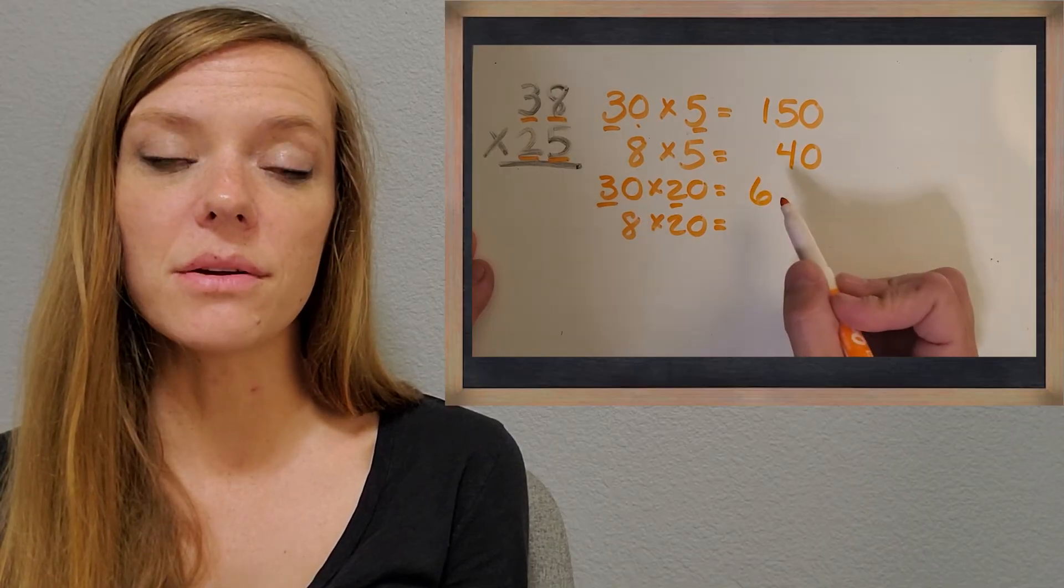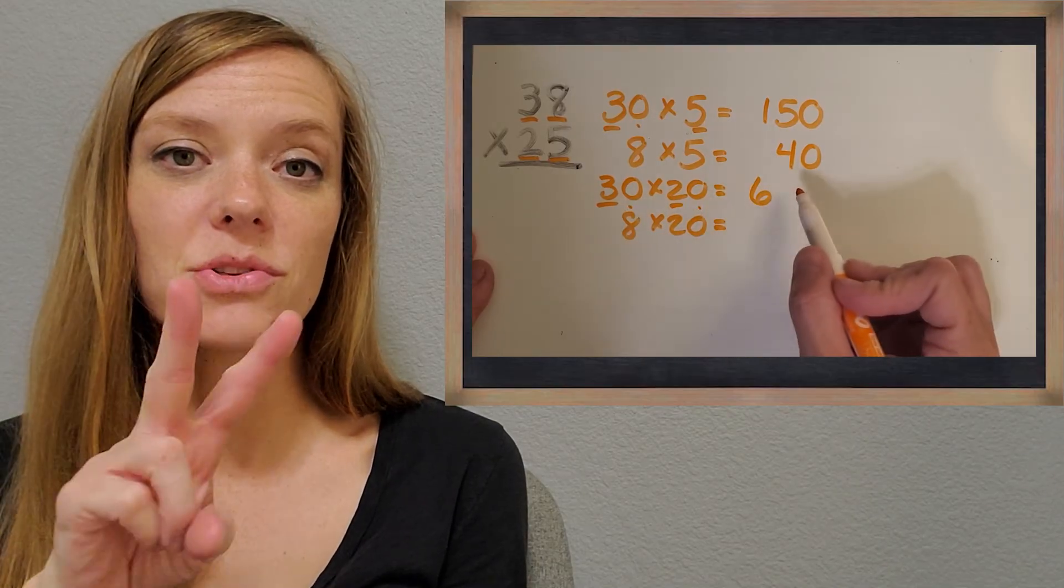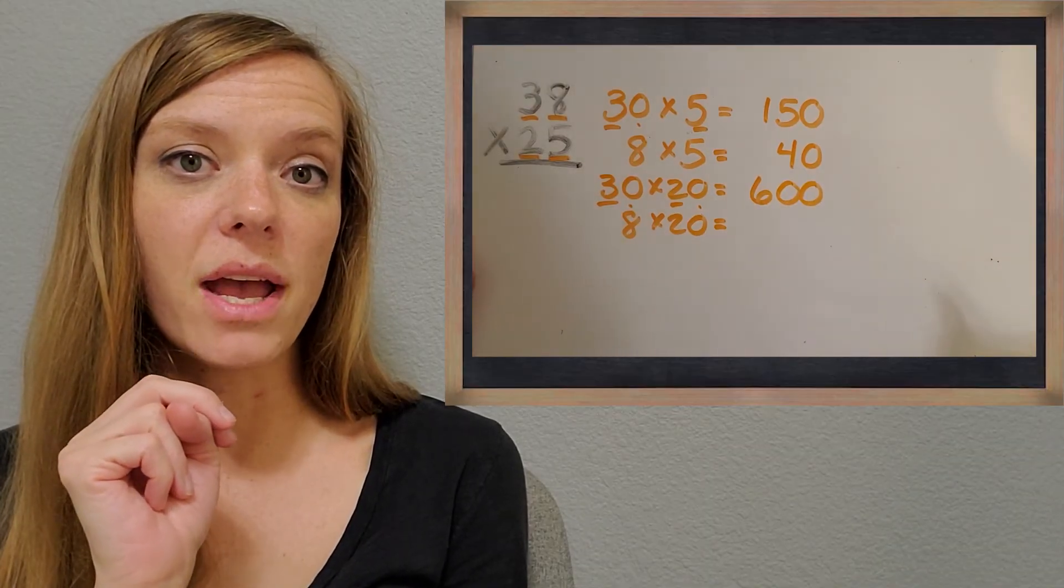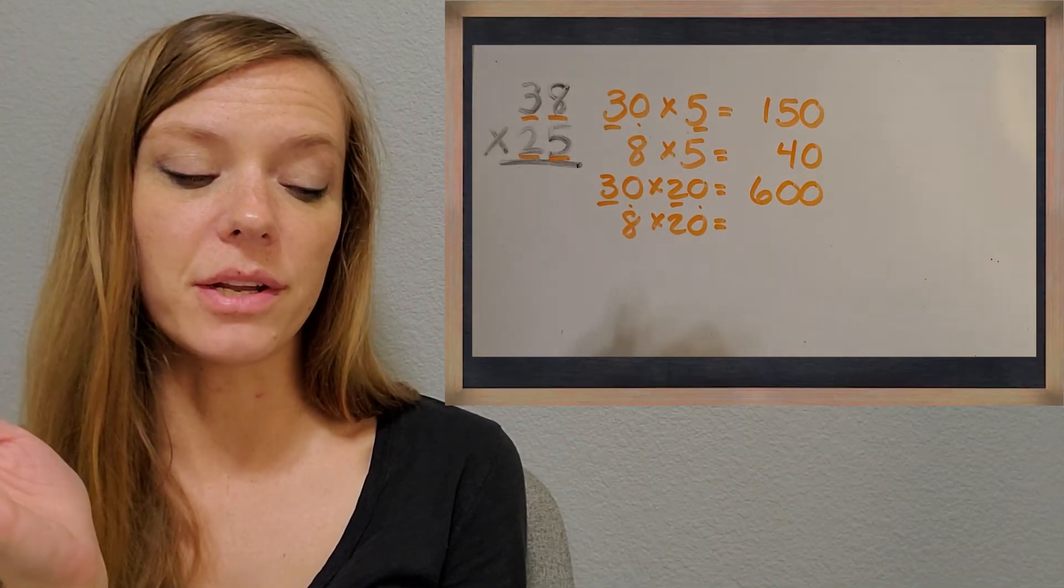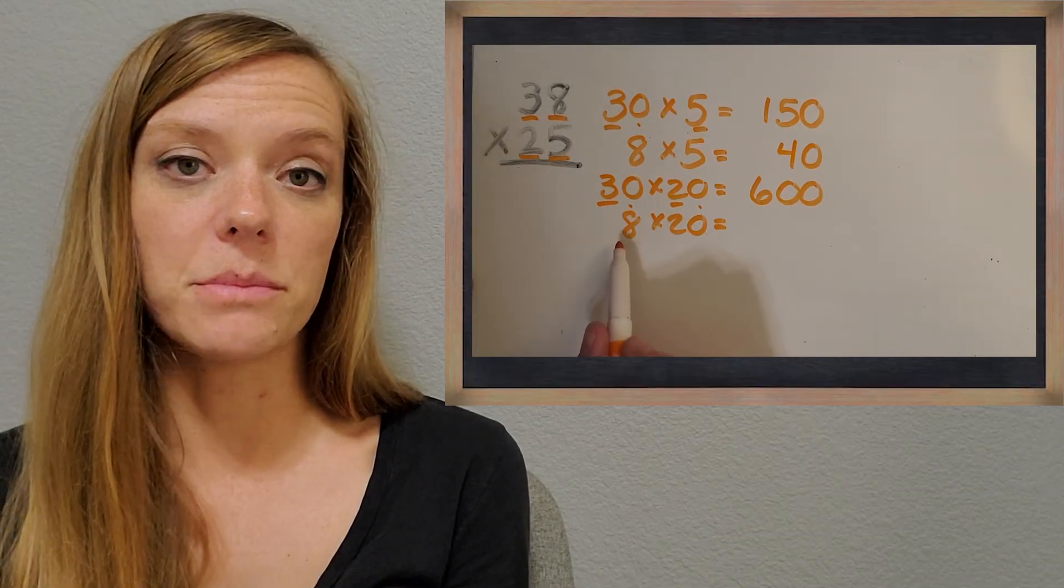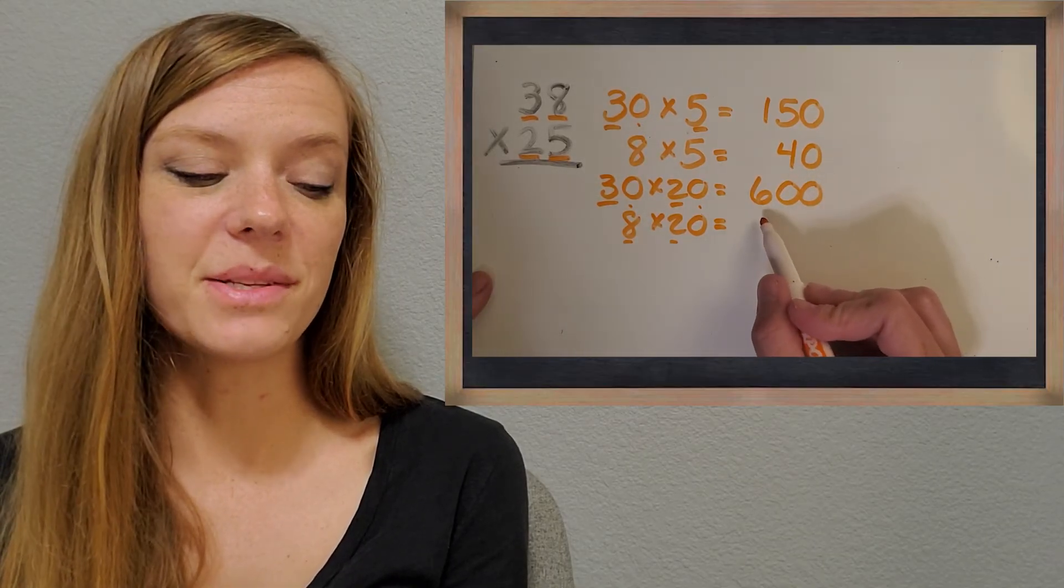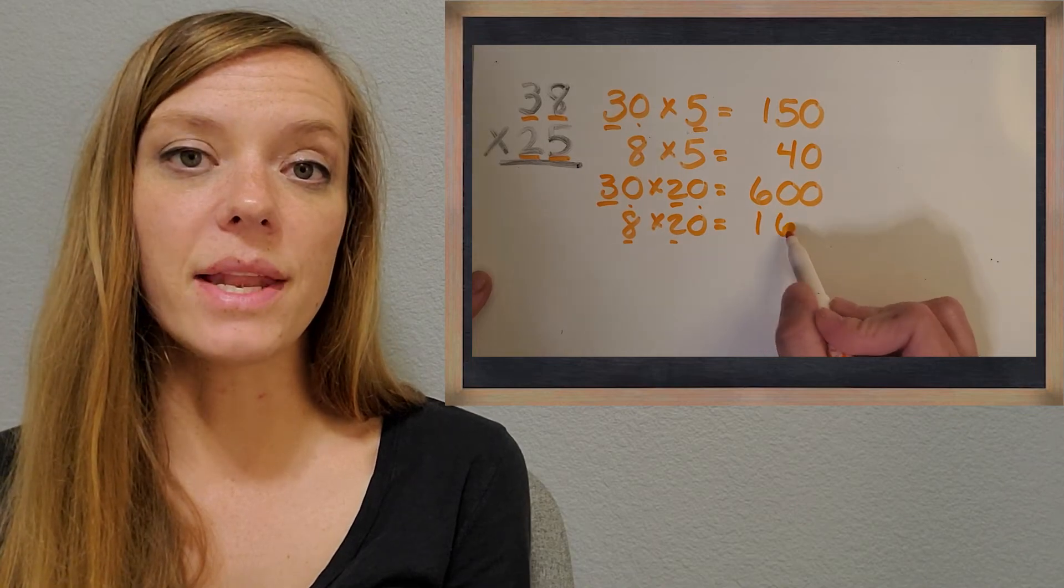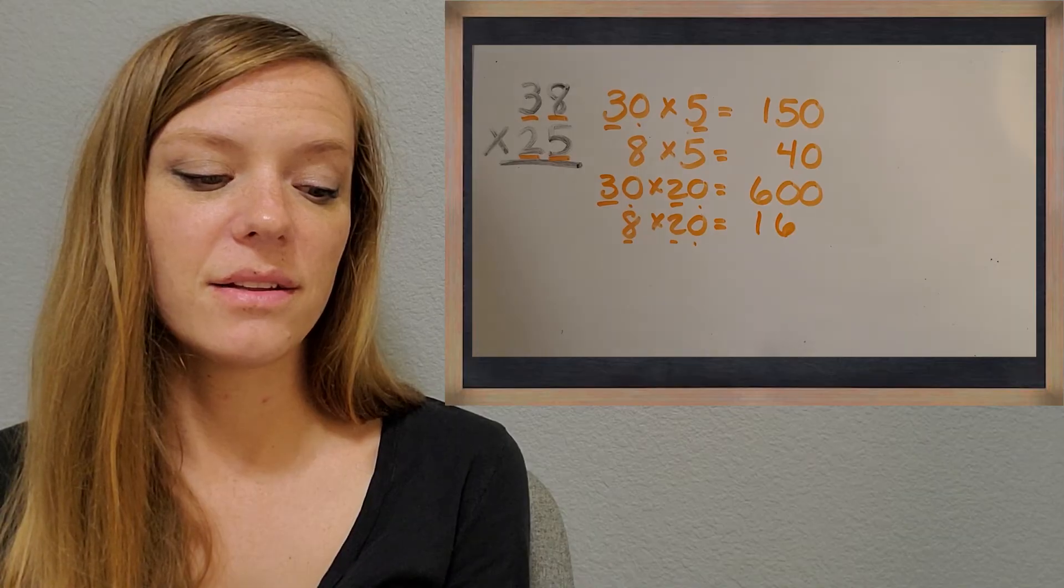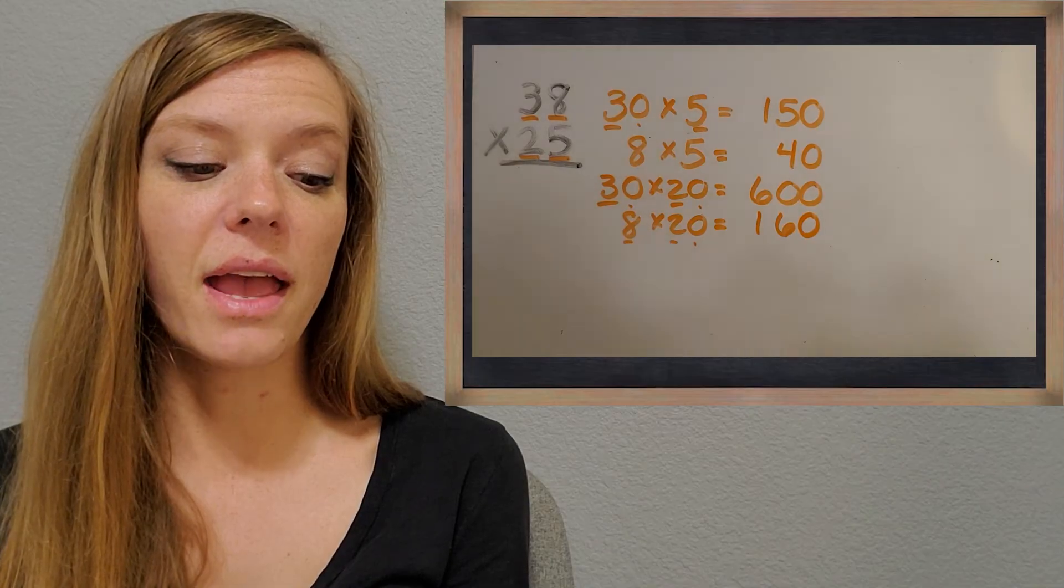And then how many zeros can you count in the two factors? Awesome. There's two. And so we're going to stick two at the end of our answer. So now it looks like 600. All right, then let's do that last one. What is eight times two? Awesome. 16. And then how many zeros are in my factors? Just that one. So I'm going to put one in my answer. And I have 160.